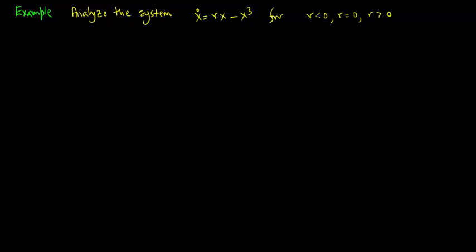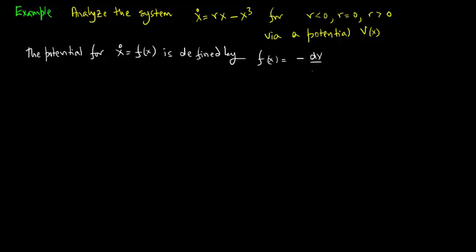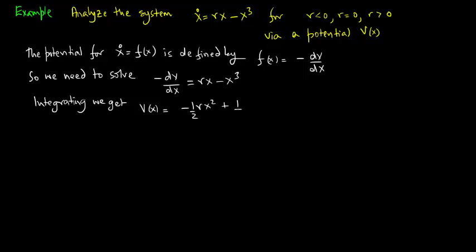Let us consider an example. Analyze the system x dot equals rx minus x cubed for r less than zero, equal to zero, and greater than zero via a potential function v of x. The potential for x dot equals f of x is defined by f of x equals minus dv dx. So we need to solve minus dv dx equals rx minus x cubed. We integrate to get v of x equals minus a half r x squared plus a quarter x to the four, where we have neglected the constant of integration.